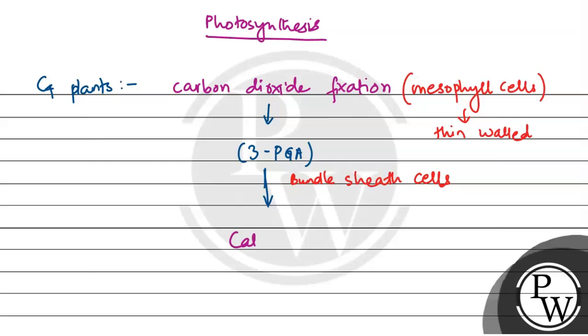Where the Calvin cycle takes place. In the bundle sheath cells, the concentration of chloroplasts is more than the mesophyll cells. So in the bundle sheath cells, in the chloroplasts, the Calvin cycle takes place.